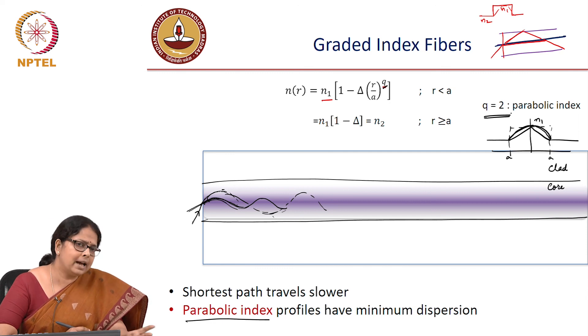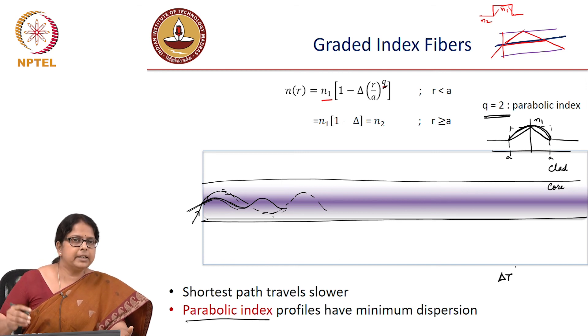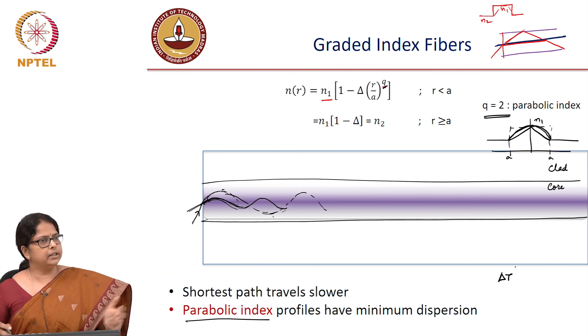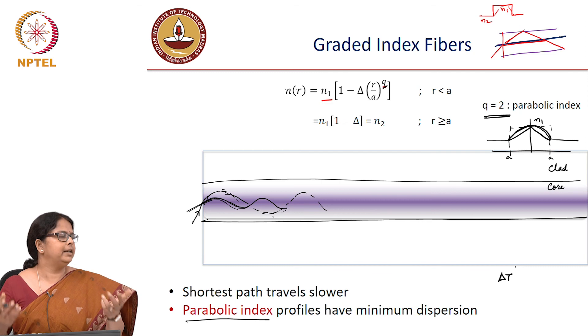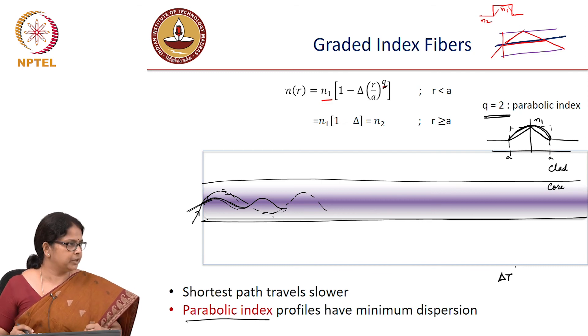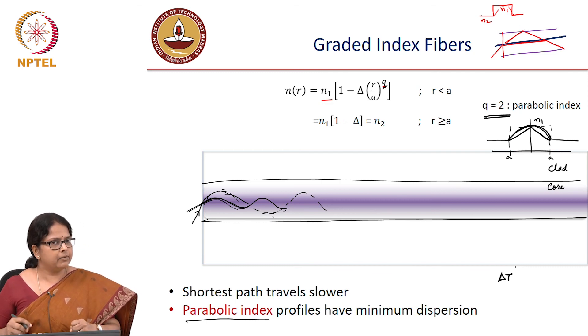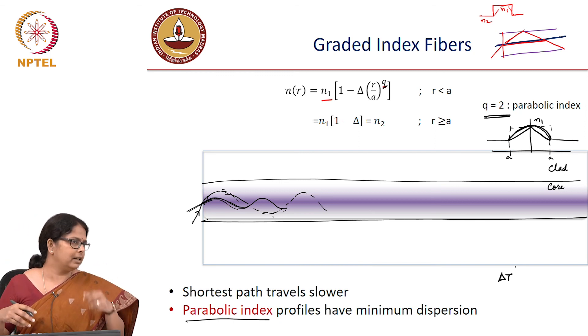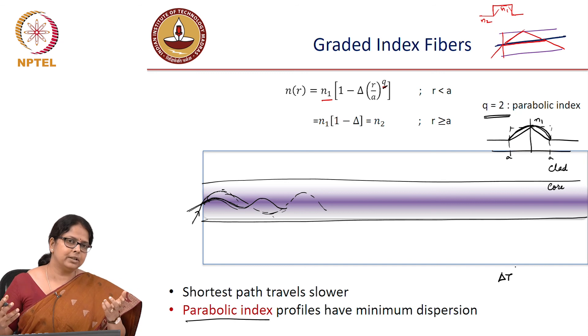It is not that you will reach a zero dispersion condition. The intermodal delay is minimum when you have Q is equal to 2. But you still have an intermodal delay. And because you still have that intermodal delay which is corresponding to delta T, the bit rate distance product is limited even in a graded index fiber. So you asked a question earlier, why do you need graded index fiber? I need graded index fiber to minimize my dispersion. But why am I not using that in long distance communication? It still cannot get rid of intermodal dispersion.